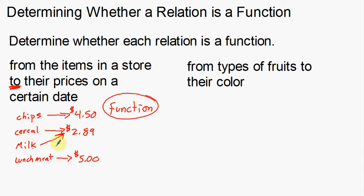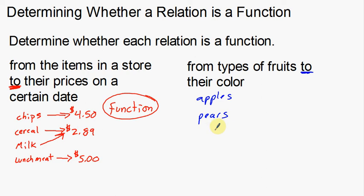It might be a little confusing since two items go to the same number, but remember: for every input there's a unique output. When I plug cereal in I get one answer; when I plug milk in I get one answer — that's okay for a function, even though you get the same answer of $2.89. Now let's look at the other example. From the types of fruits to their colors. This is a relation relating two things. So fruits to their color — I could have apples, I could have pears, I could have strawberries.